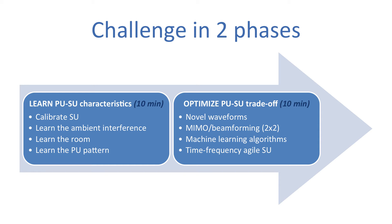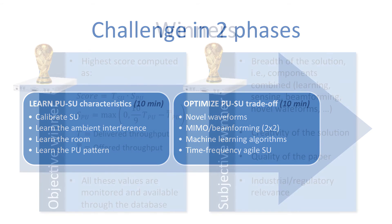In the second phase, the secondary users will operate in the optimization mode, during which they will try to optimize the objective metric that is used to score teams. Secondary users can optimize this metric by using novel waveforms, MIMO or beamforming schemes, improved machine learning, or time frequency agility.